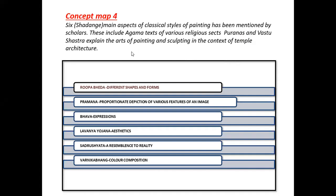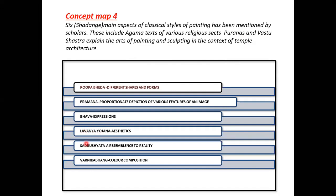The six aspects are: Rupa Beda — different shapes and forms; Pramana — proportionate depiction of various features of an image, especially limbs, so the face should be proportionate to the body; Bhava — expressions; Lavanya Yojana — aesthetics; Saddhrustaya — resemblance to reality; and Varnika Bhaga — color composition, where very bright colors are used only in certain contexts and dark colors in certain other aspects. When all six points are taken into consideration, the result is a beautiful painting or sculpture.